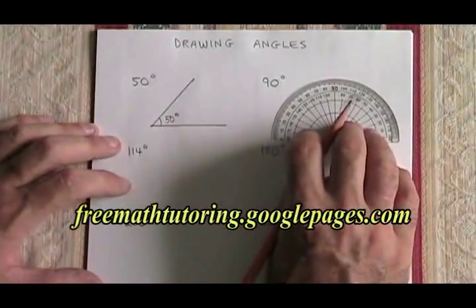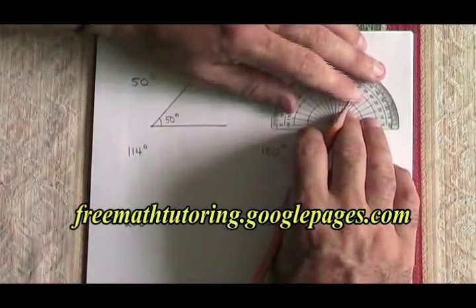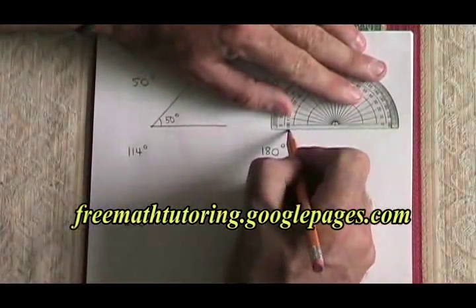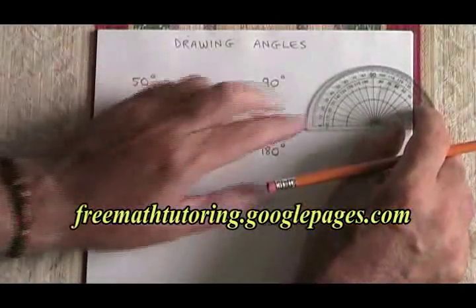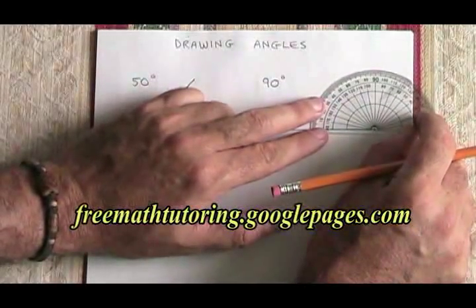Let's try drawing a 90 degree angle, but we will use the left side of the protractor this time instead. I need a straight line. Once I have my straight line, I can zero the protractor on it.